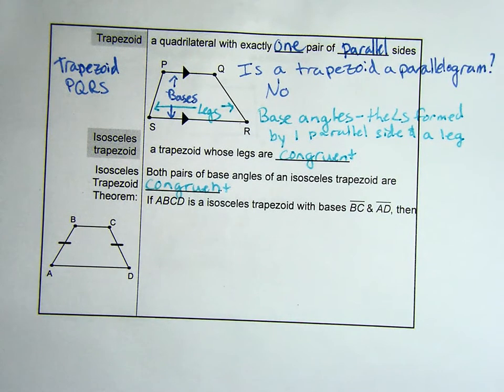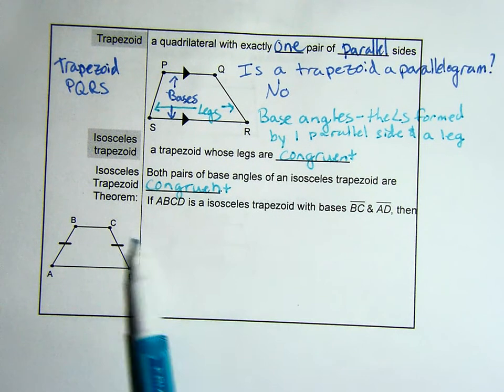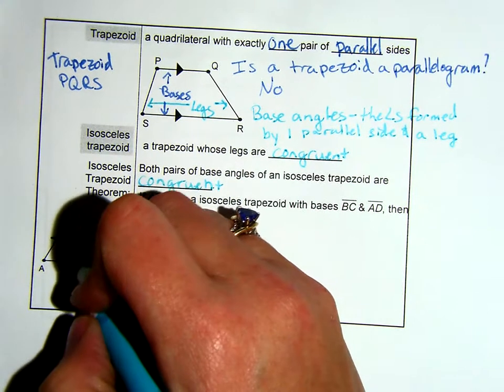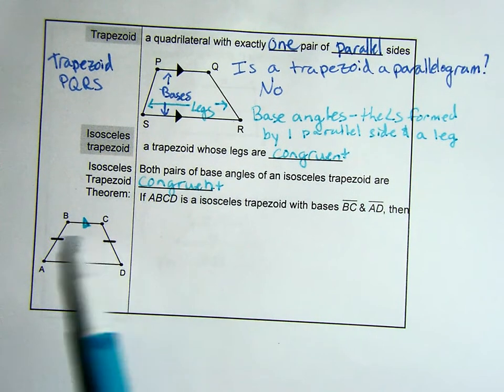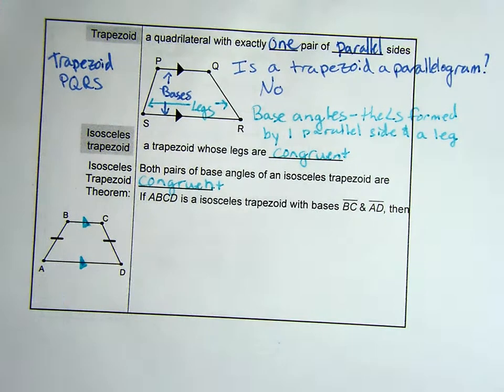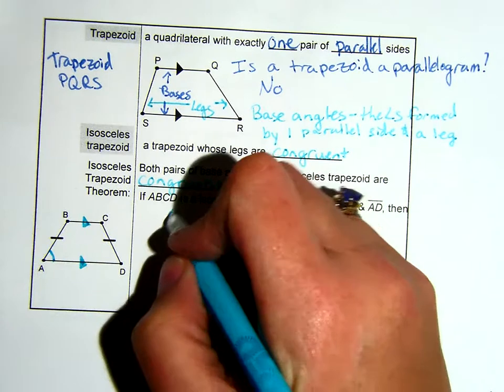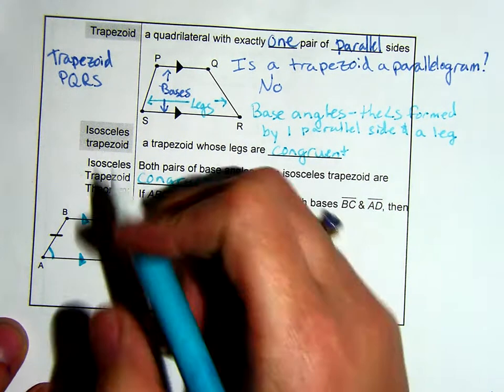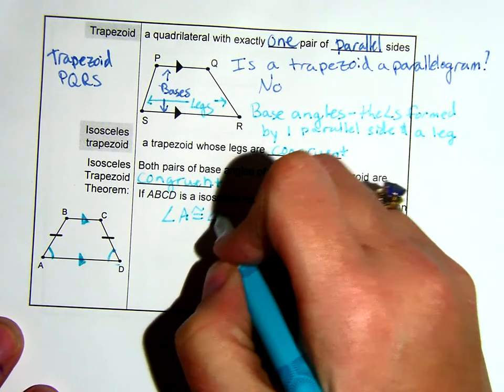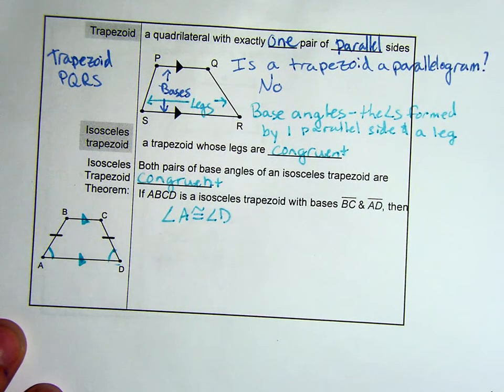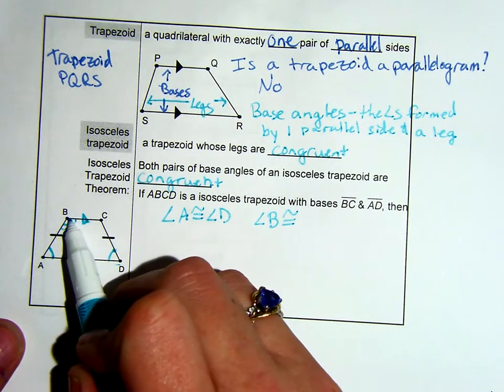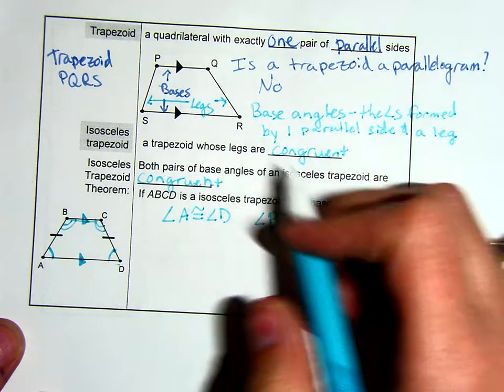And what it means by pairs, they have to be along the same base to be congruent. So if ABCD is an isosceles trapezoid with bases BC and AD, and with them telling you that, you know BC is parallel to AD. So we do have, in fact, an isosceles trapezoid. One base angle is angle A. If I follow the base that formed A, I will get to the other base angle that A is congruent to. So angle A and angle D are congruent. The other pair, angle B, is congruent to, follows B's base, and you will get to your other part of the pair, angle C.